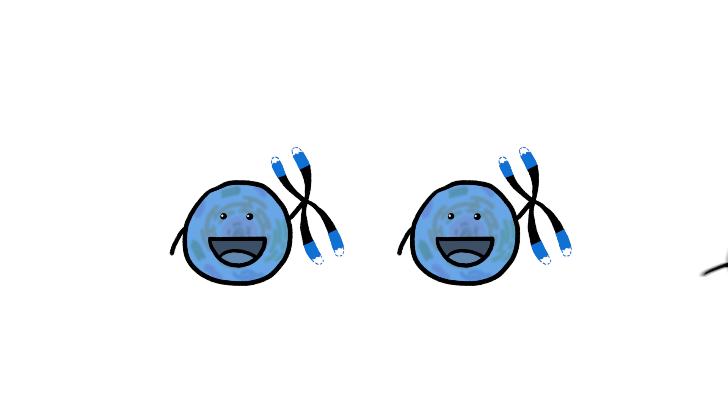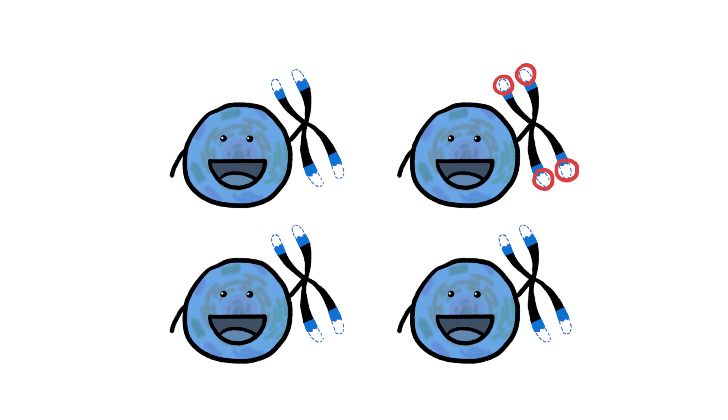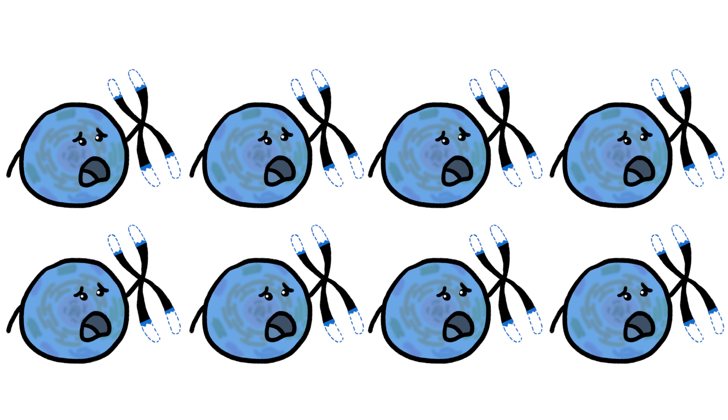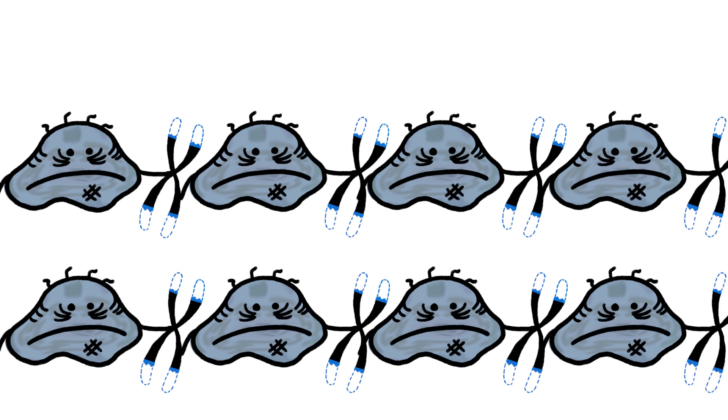That's because cells need to divide to replace old or dysfunctional cells, but each time they replicate they lose a little bit of DNA from the end of each chromosome. Normally that doesn't matter, since these lost bits come from the telomere end caps that don't encode important information. But after many replications, the telomeres get trimmed so short that the cells can't afford to lose any more DNA, and they stop replicating.